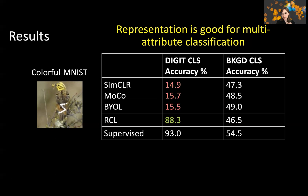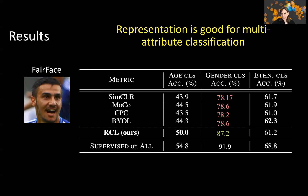The same improvement appears in FairFace multi-attribute classification on age, gender, and ethnicity. Ethnicity acts as a shortcut — its performance is close to supervised learning across all schemes. However, for gender, contrastive learning significantly reduces accuracy, while in RCL we keep the accuracy on gender also much closer to the supervised learning method. The representation we get has information about all of these tasks instead of focusing on a subset of the semantics.